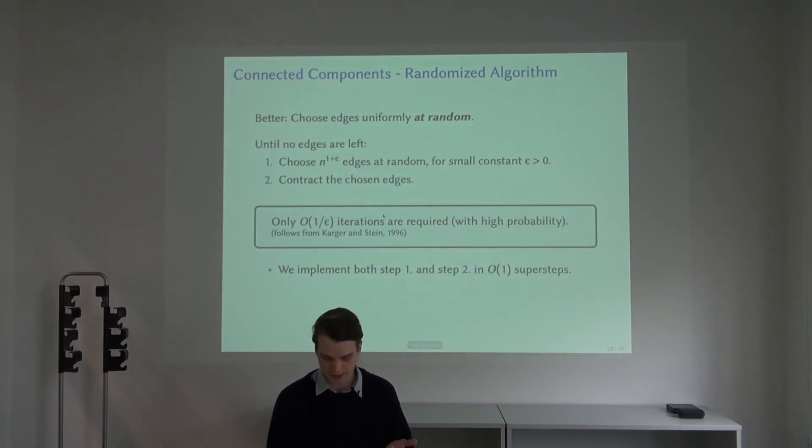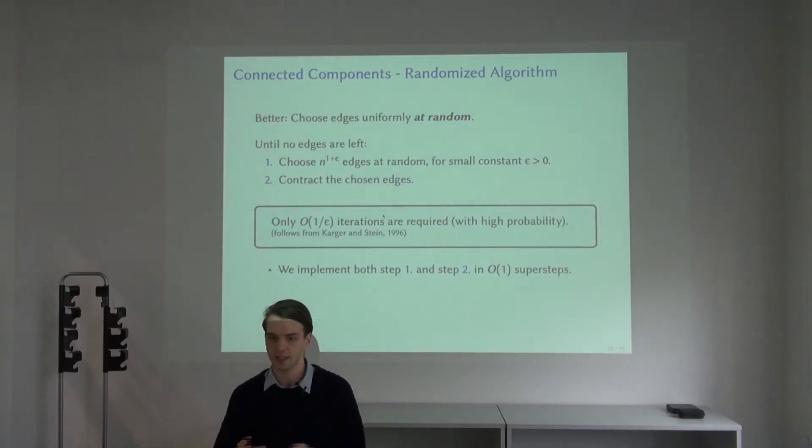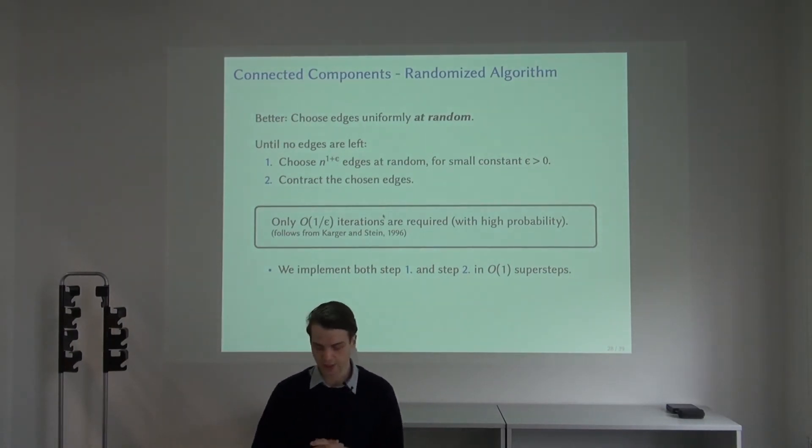We still need to implement these steps in parallel, but this turns out to be feasible in just a constant number of super steps. Intuitively, all we really need to do these random selections is some information about how many edges are left so that we can choose the probabilities correctly. Contracting the edges can also be done independently for the processors. Overall, we just get a constant number of super steps if we choose the parameters adequately.